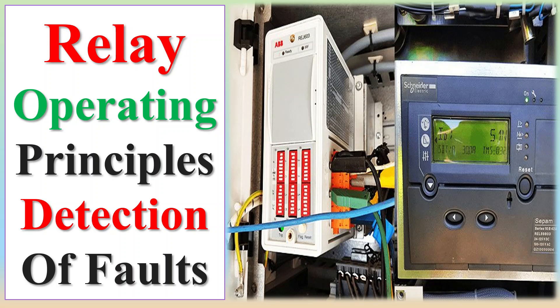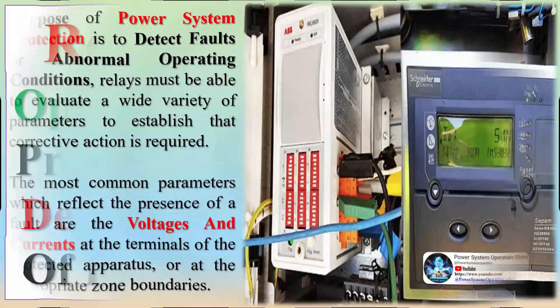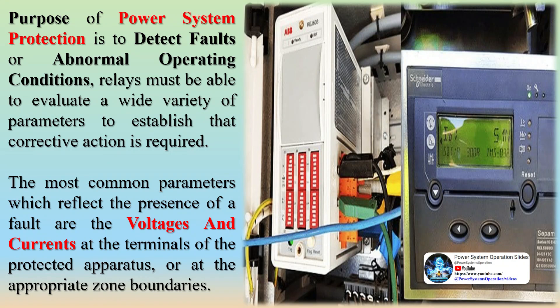The primary purpose of power system protection is to detect faults within the electrical network to ensure the safety, reliability, and efficiency of the power supply. Faults, which can occur due to various reasons such as equipment failure, natural disasters, or human error, pose significant risks to both the infrastructure and the people relying on the power system.